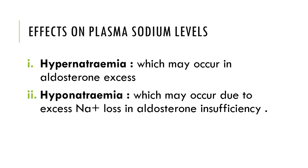Regarding the effects on plasma sodium level: hypernatremia occurs in aldosterone excess because aldosterone causes sodium reabsorption from the distal convoluted tubules and collecting ducts, so more sodium is reabsorbed and the sodium concentration in the blood increases. The important effect of hypernatremia is an increase in extracellular fluid volume, which in turn increases blood pressure.